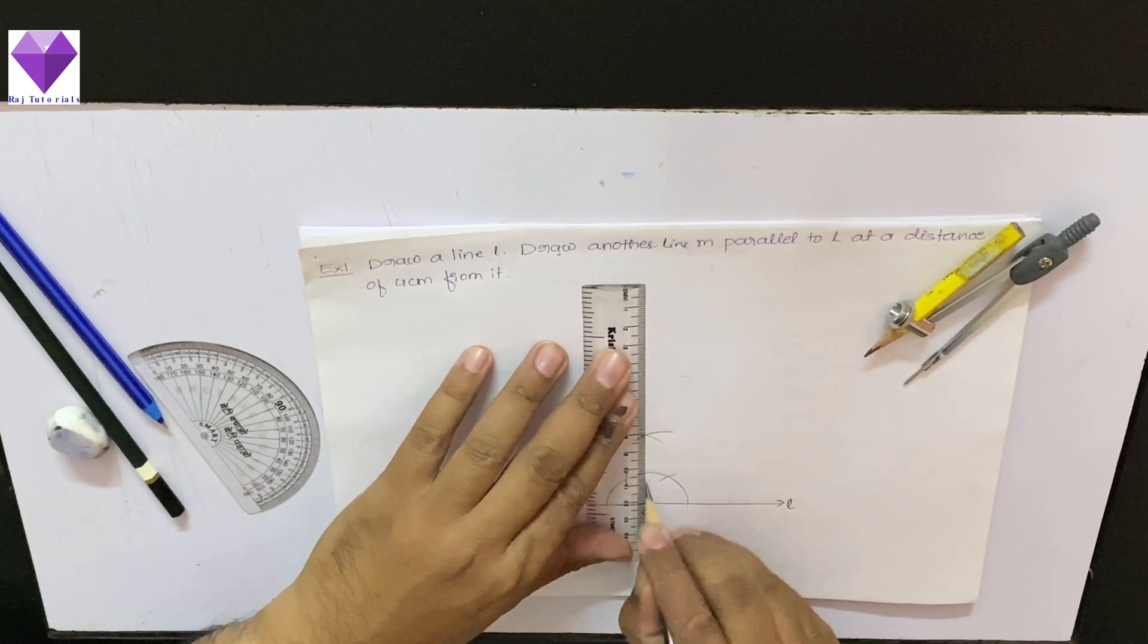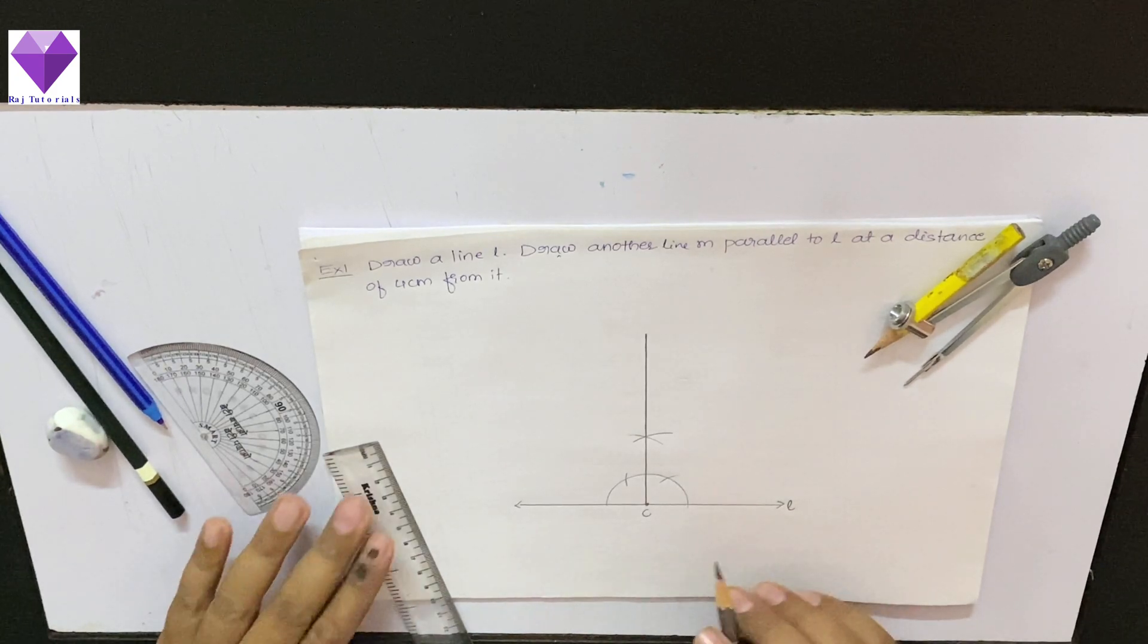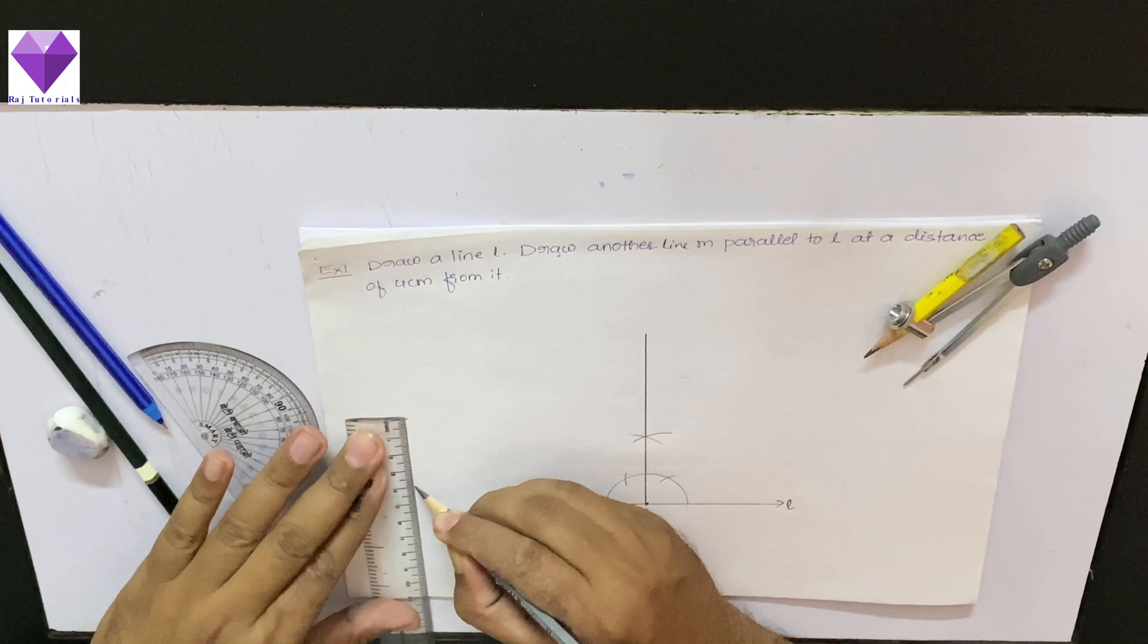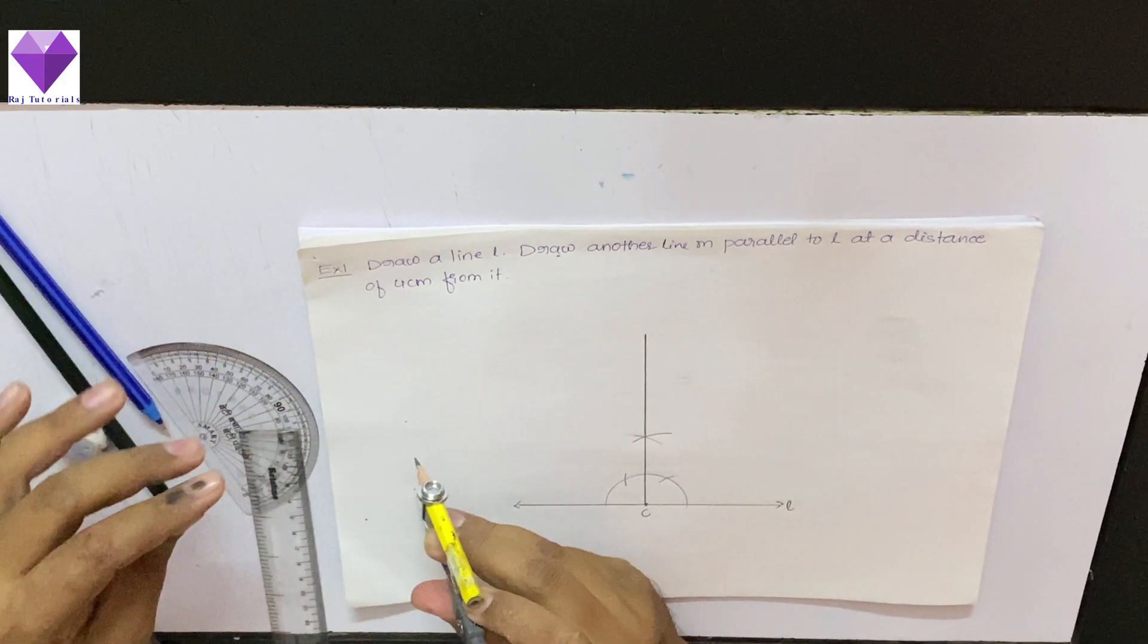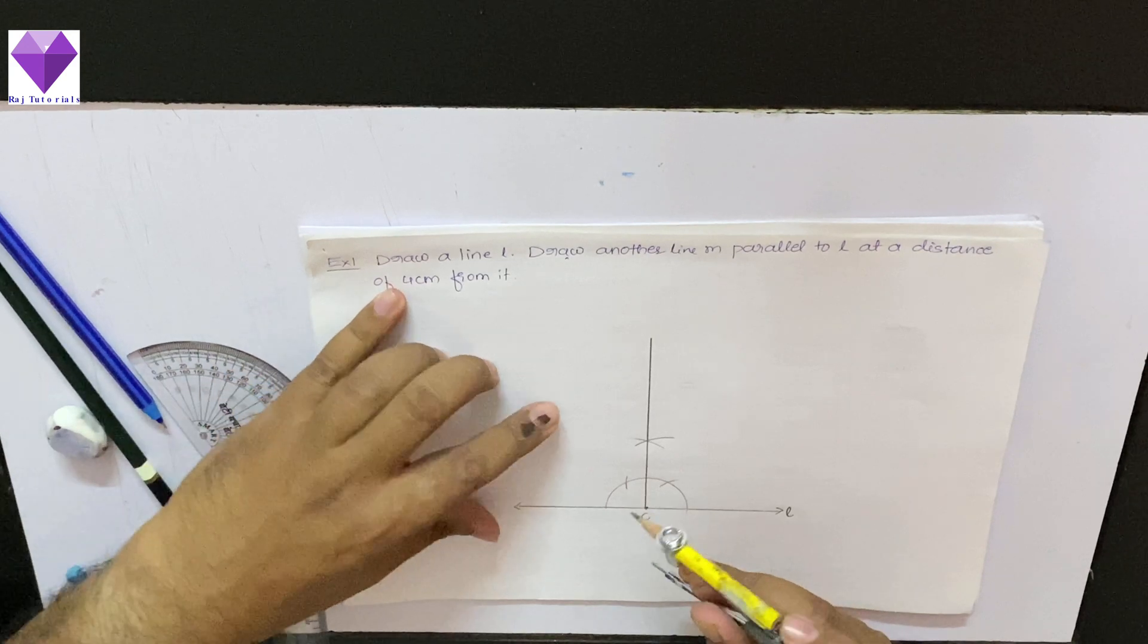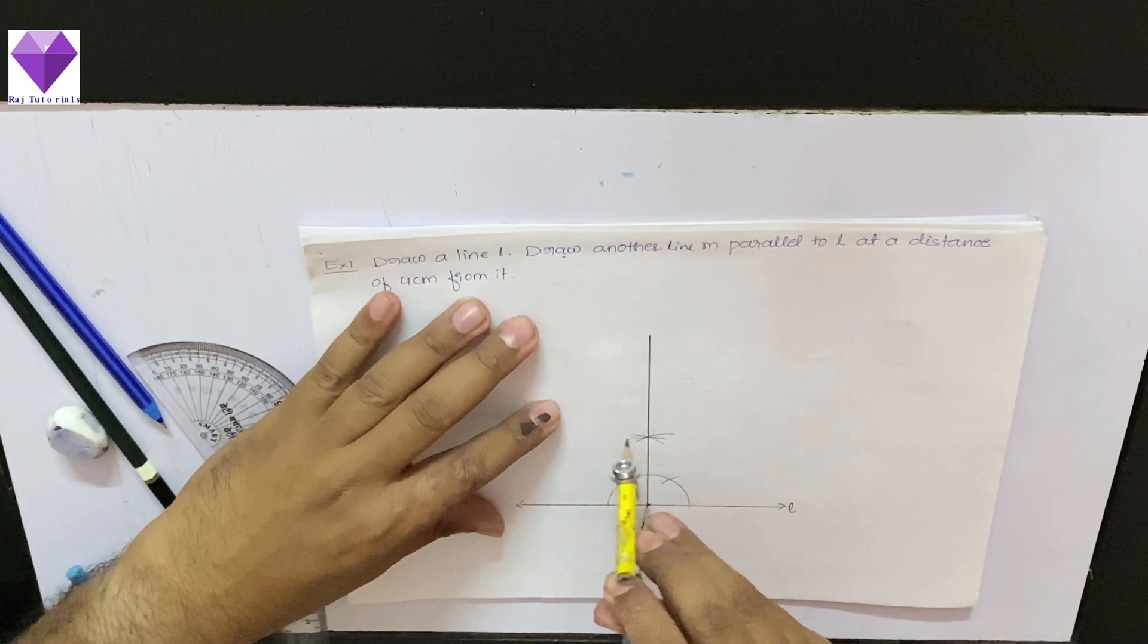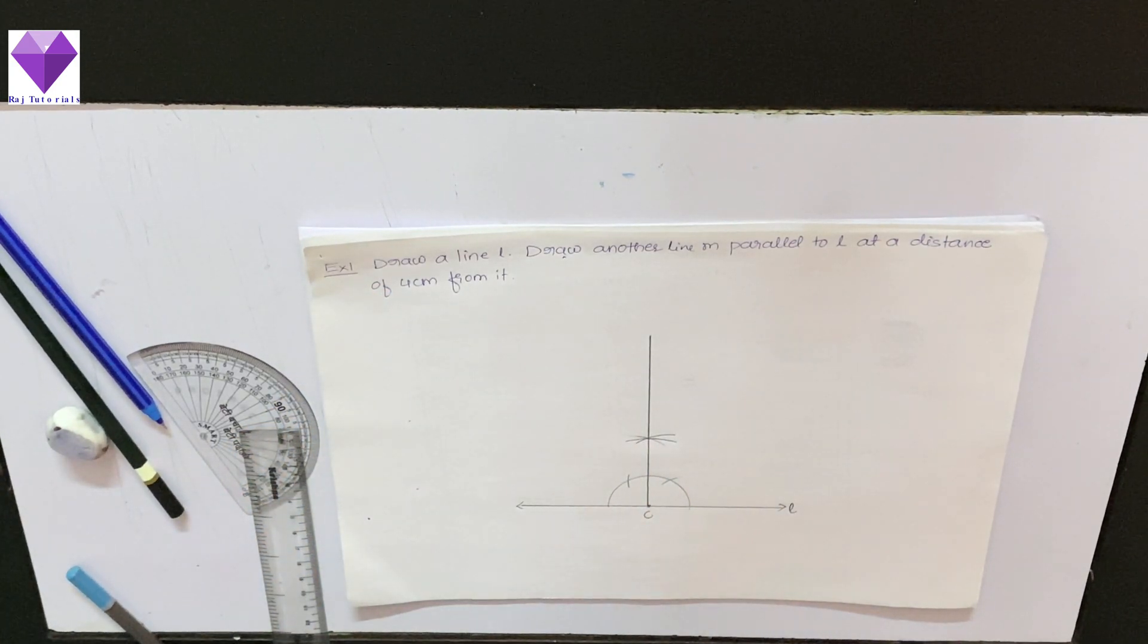Now on this line I need a four centimeter arc, so I will measure four centimeter in my rounder. And with C as center and radius four centimeter, I am cutting the arc. Now at this point G.